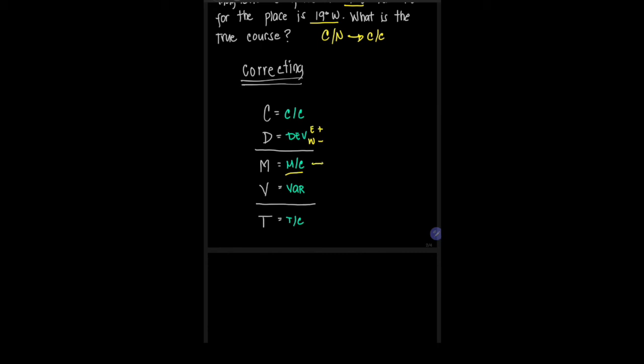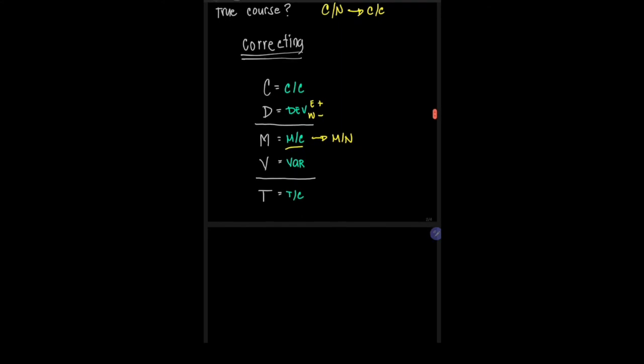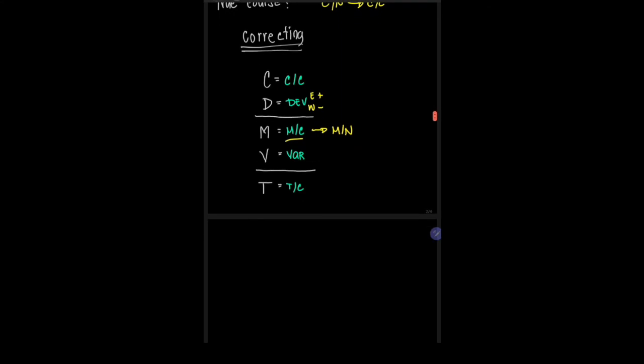Magnetic course is measured from the magnetic north. Now, if we're going to apply the variation, when the variation is east, we're going to add that to the magnetic north. And when the variation is west, we're going to subtract that from the magnetic north. And the resulting value, that will be the true course in degrees true.